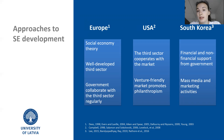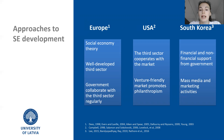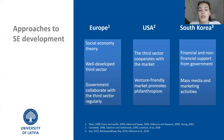On the other hand, we may see the model used by the United States. Their government uses a different approach in relation to social enterprises and actually doesn't interfere with the sector. Instead, the third sector cooperates with the market, and as a result, a venture-friendly market promotes philanthropism and donations.